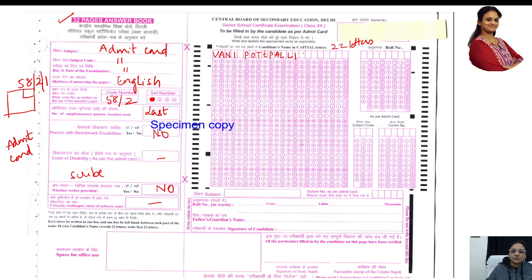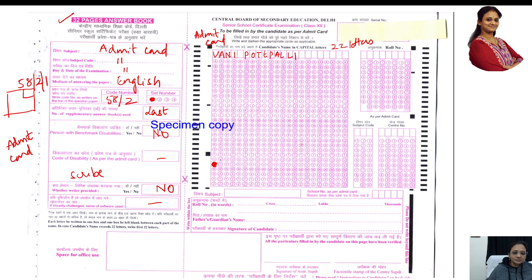If your name is longer than 22 characters, leave one box as a gap between each part of your name. Fill according to your admit card. Now for each letter: find V in the column, fill that bubble. Then A, then N, then I — like that, one letter in each box.